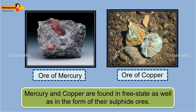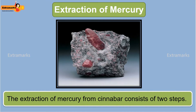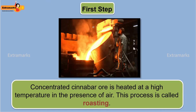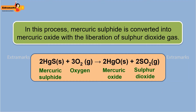Let us first look at how mercury is extracted. Cinnabar, or mercury-2-sulfide, is a principal ore of mercury. The extraction of mercury from cinnabar consists of two steps. In the first step, concentrated cinnabar ore is heated at a high temperature in the presence of air. This process is called roasting. In this process, mercury sulfide is converted into mercury oxide with the liberation of sulfur dioxide gas.